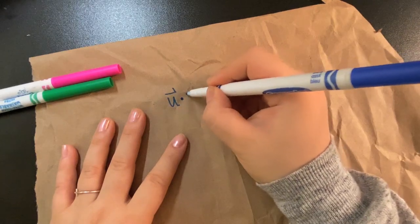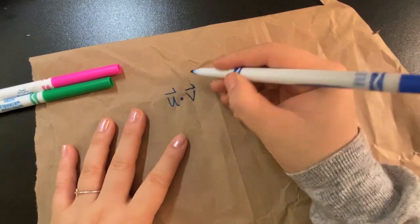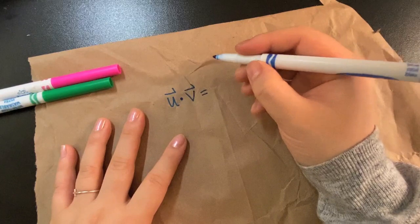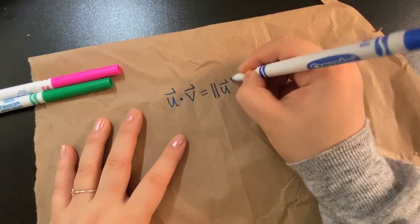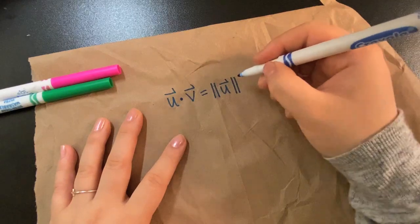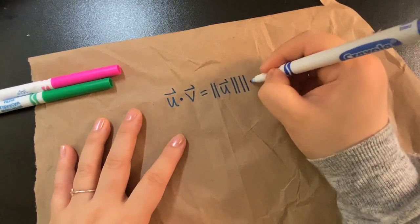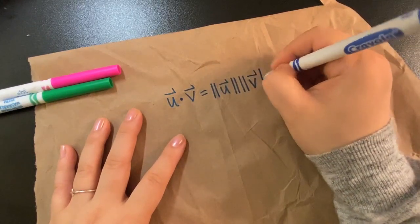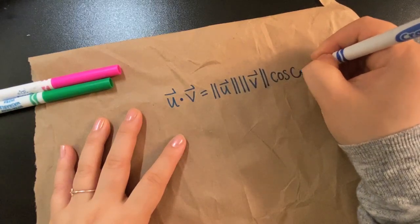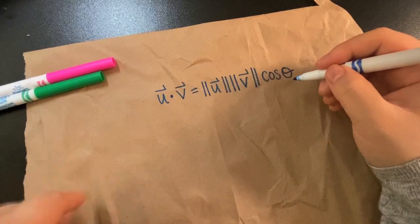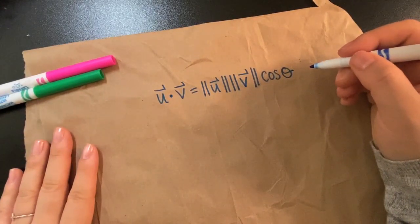So U dot V equals the magnitude of U, which is just a fancy word for the length of U, times the magnitude of V times cosine of the angle between them, which I'm going to call theta. So that's the main formula.